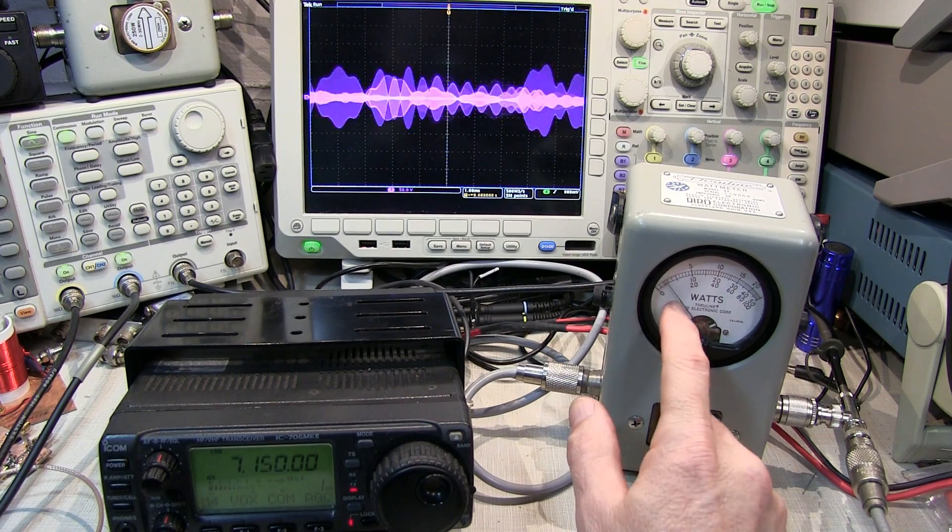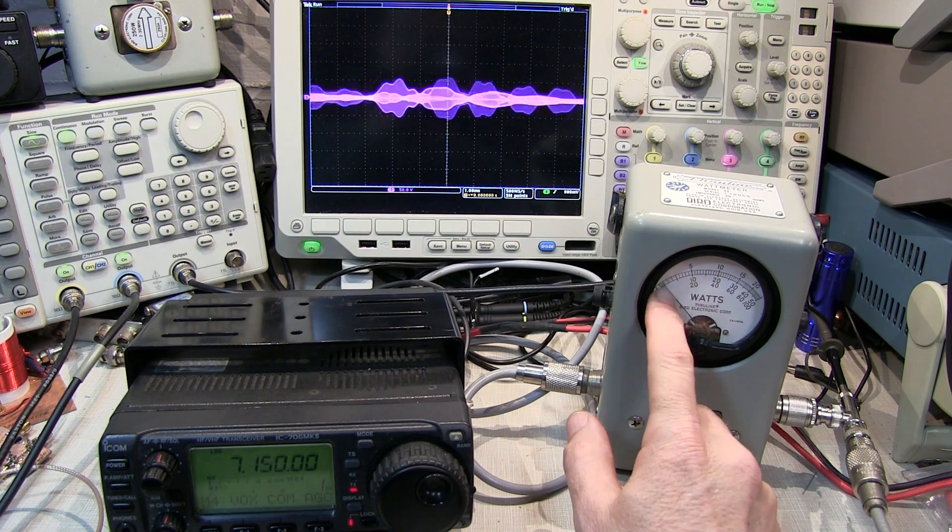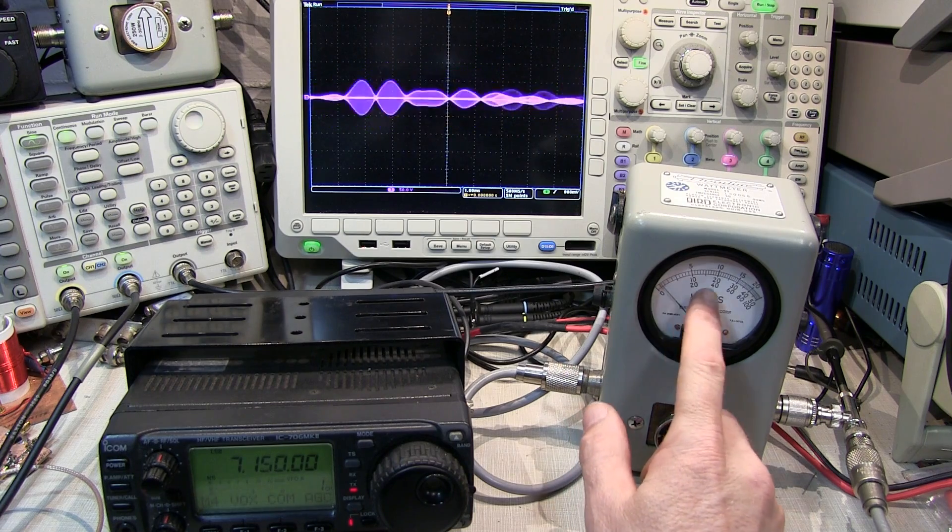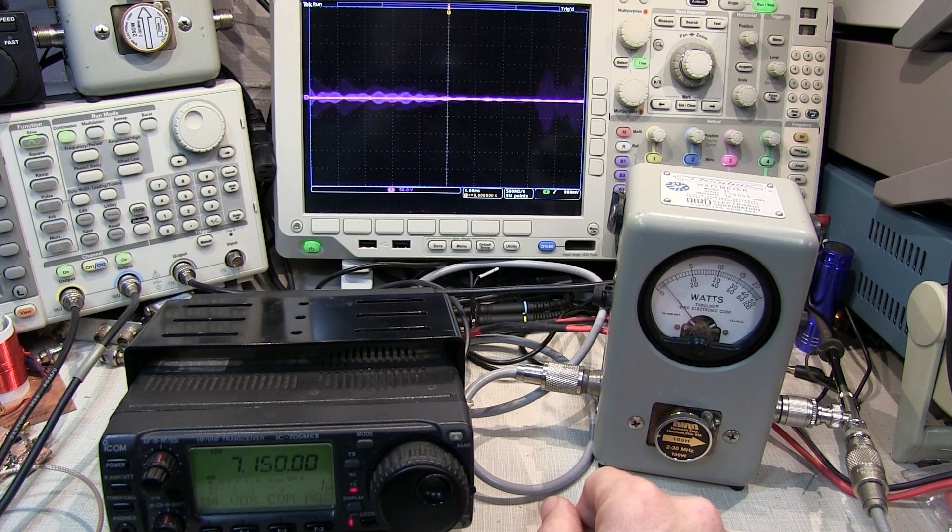But if we look at the average reading RF wattmeter, I'm lucky if I see any excursions that are above about 10 or 15 watts. If I do more constant tones like that, or a whistle or something in the microphone, I might cause a larger excursion on the meter, but it would be very tough for me to actually see anything close to that 100 watts.